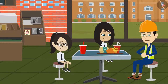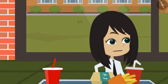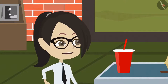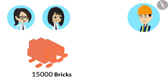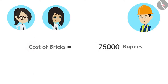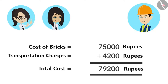You are absolutely right, Vandana. So tell me, how much did the bricks cost for the construction of this entire canteen? Sir, you have not told us the cost of one brick. If you tell us that, we will be able to calculate the total cost. The cost of one brick is 5 rupees. So 15,000 bricks will cost 15,000 multiplied by 5, which is 75,000 rupees. The transportation charges are 4200 rupees. Therefore, the total cost is 79,200 rupees.